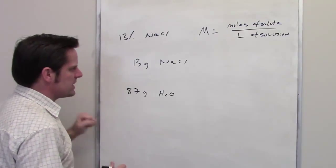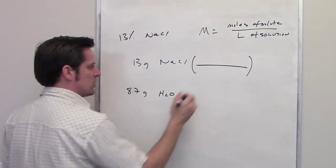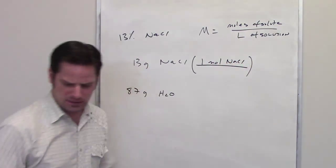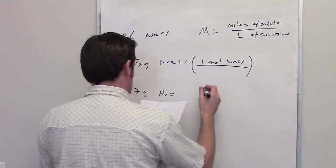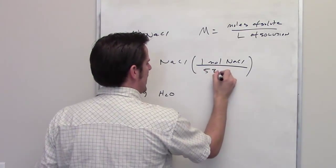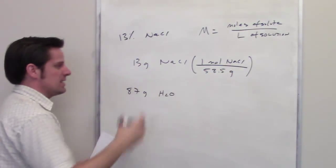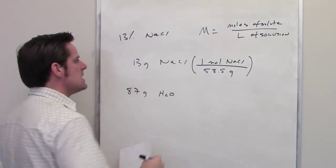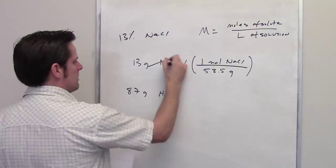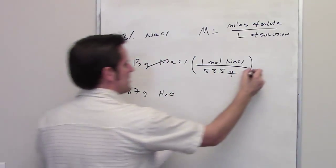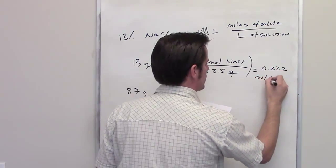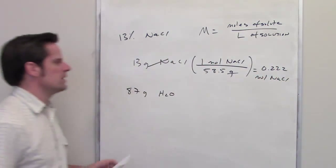So if I have 13 grams of sodium chloride, I use the molecular weight of sodium chloride. One mole of sodium chloride weighs 58.5 grams per mole. I throw that into my calculator and determine that equals 0.222 moles of sodium chloride.